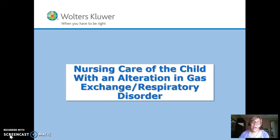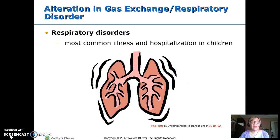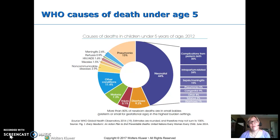This is nursing care of the child with an alteration in gas exchange or respiratory disorder, part one. Kids just get a lot of respiratory infections — they have colds all the time. It's the most common illness. Respiratory is also the most common reason children are hospitalized. And if you think globally, pneumonia is the most common reason children under 5 die other than during the neonatal period.